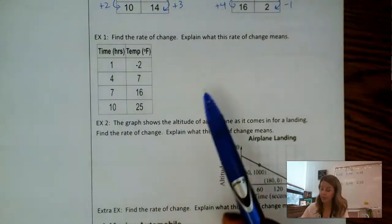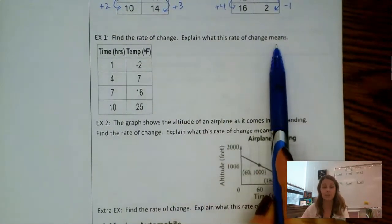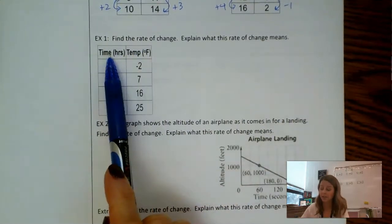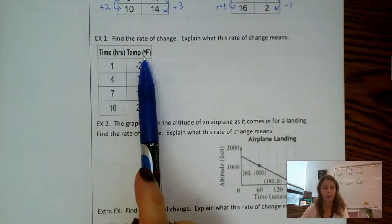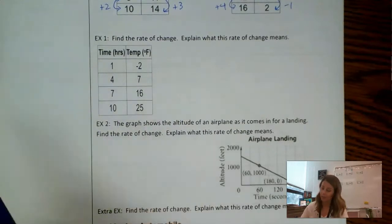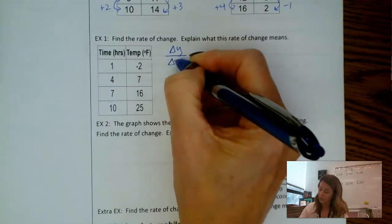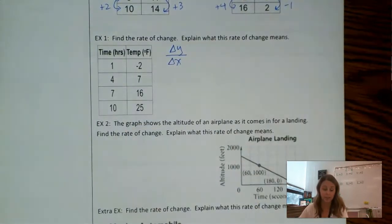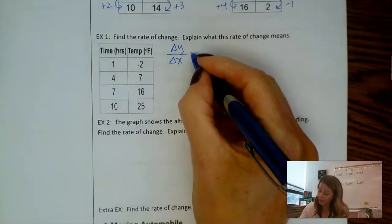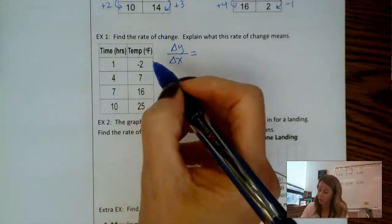Okay let's continue on. Let's continue to do rate of change, but let's add in here: Well what does it mean? What does it have to do with time and temperature as our labels here? Okay rate of change. I'm thinking change in y over change in x, so that delta y over delta x. So let's determine that change in y.